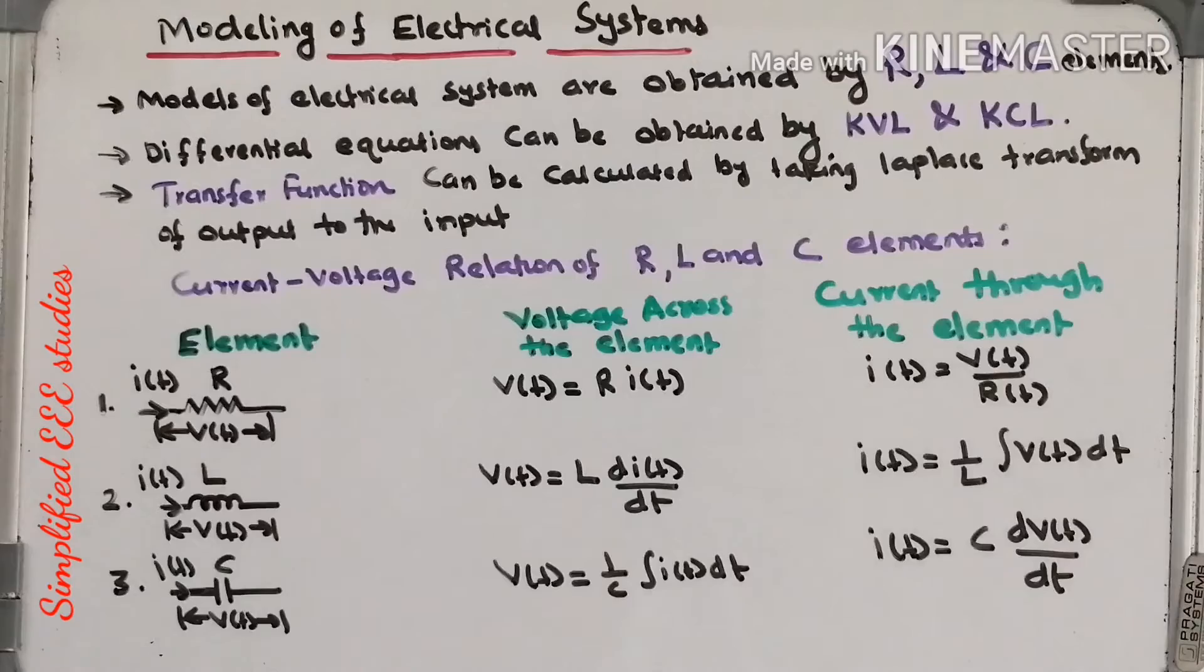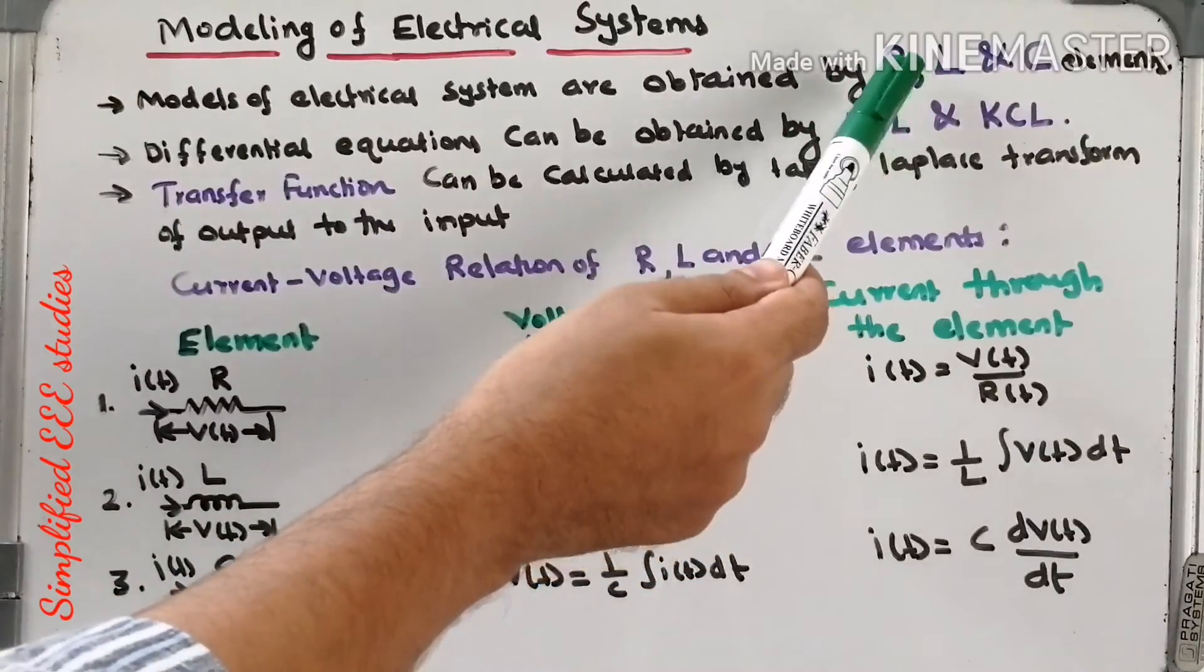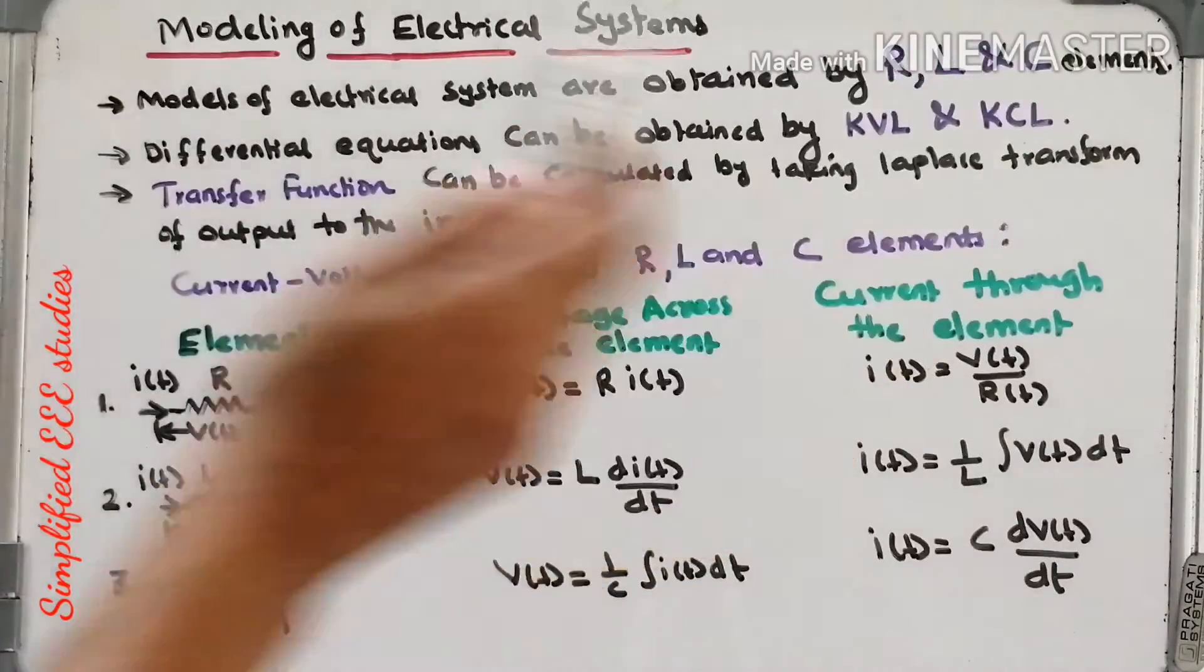Hello everyone, in this session I will be discussing modeling of electrical systems. Models of electrical systems are obtained by using the basic elements such as resistor, inductor, and capacitor.